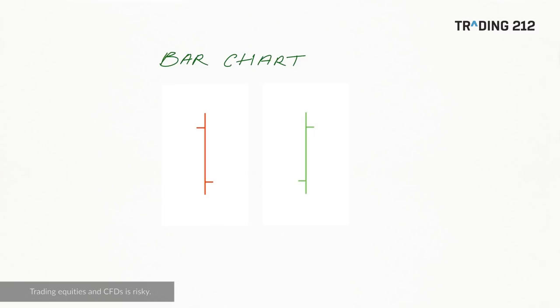Heiken Ashi candlesticks are similar to standard candlesticks but they present slightly different data. Before we get into Heiken Ashi, let's quickly recap how standard bar charts and standard candlesticks work. Each bar presents graphically four pieces of information: the high and the low of the day, represented by the line in the middle, and then the open on the left and the close on the right. One bar is red and one is green — the green one has the close being higher than the open, and the red one is where the close was lower than the open.